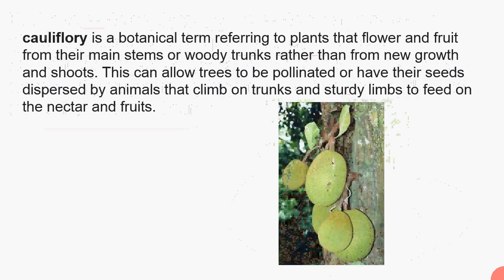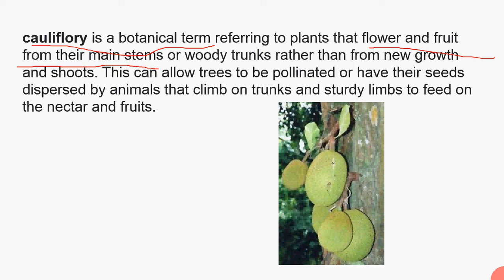Cauliflory is a botanical term referring to plants that flower and fruit from the main stem or woody trunks, rather than from new growth. Normally in trees or plants, flowering and fruiting happens at the branch tips, but in cauliflory, flowering and fruiting happen from the main trunk. This allows trees to be pollinated or have their seeds dispersed by animals that climb on the trunk and sturdy limbs to feed on nectar and fruits.